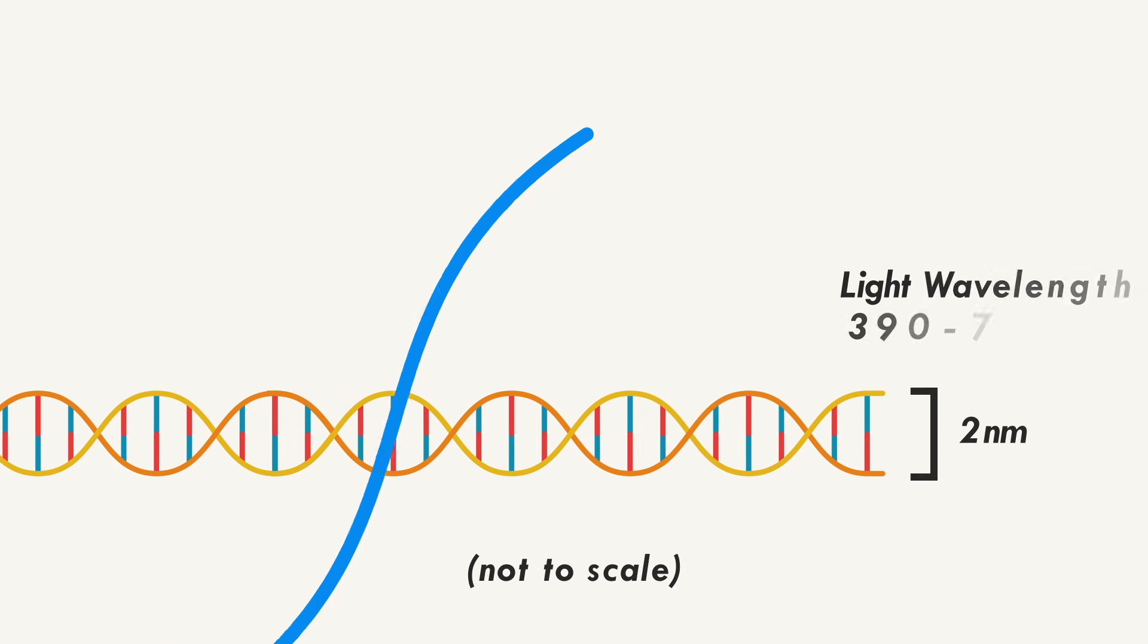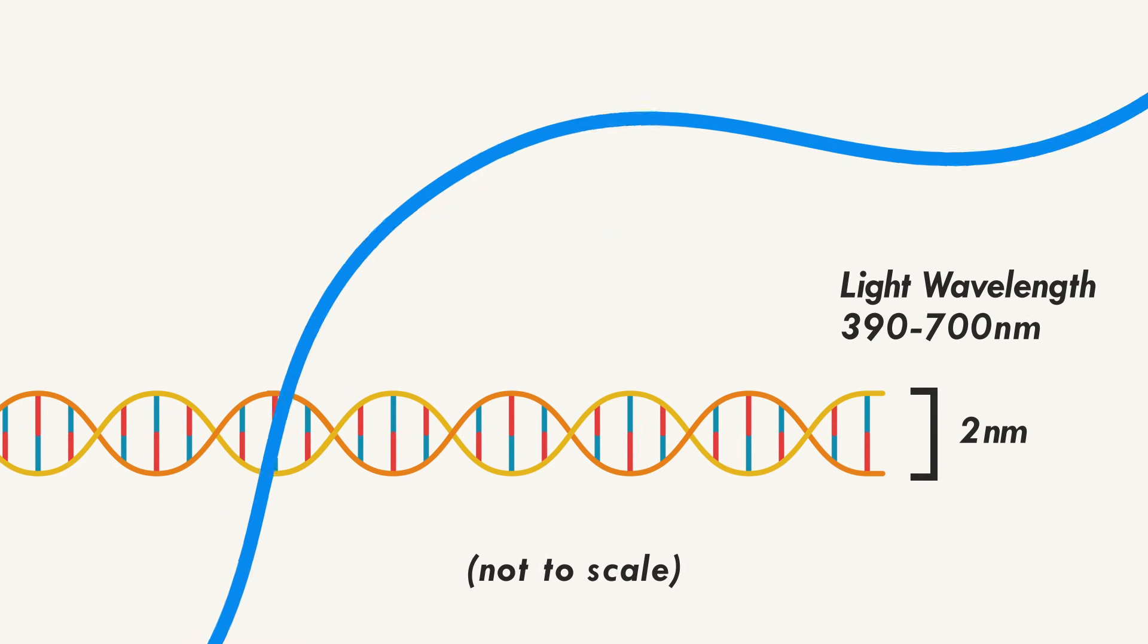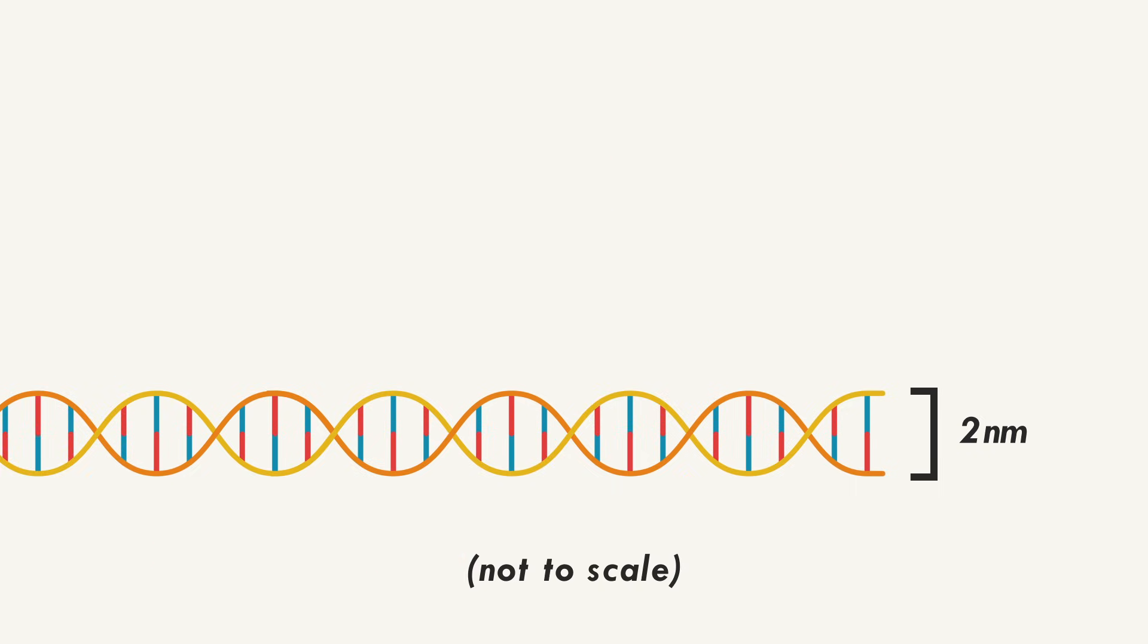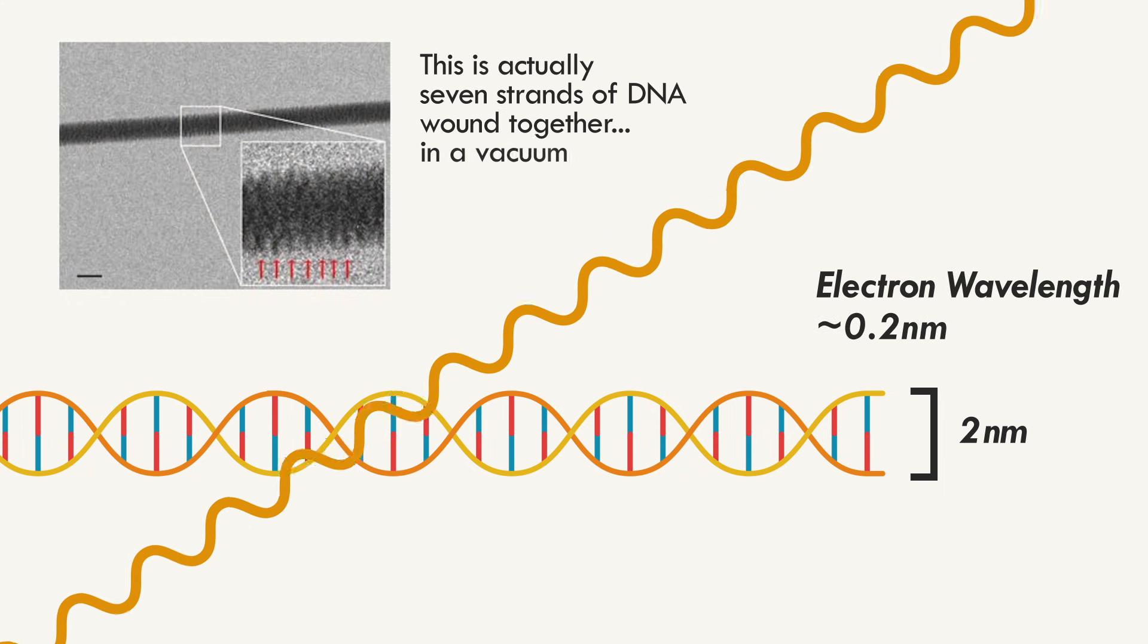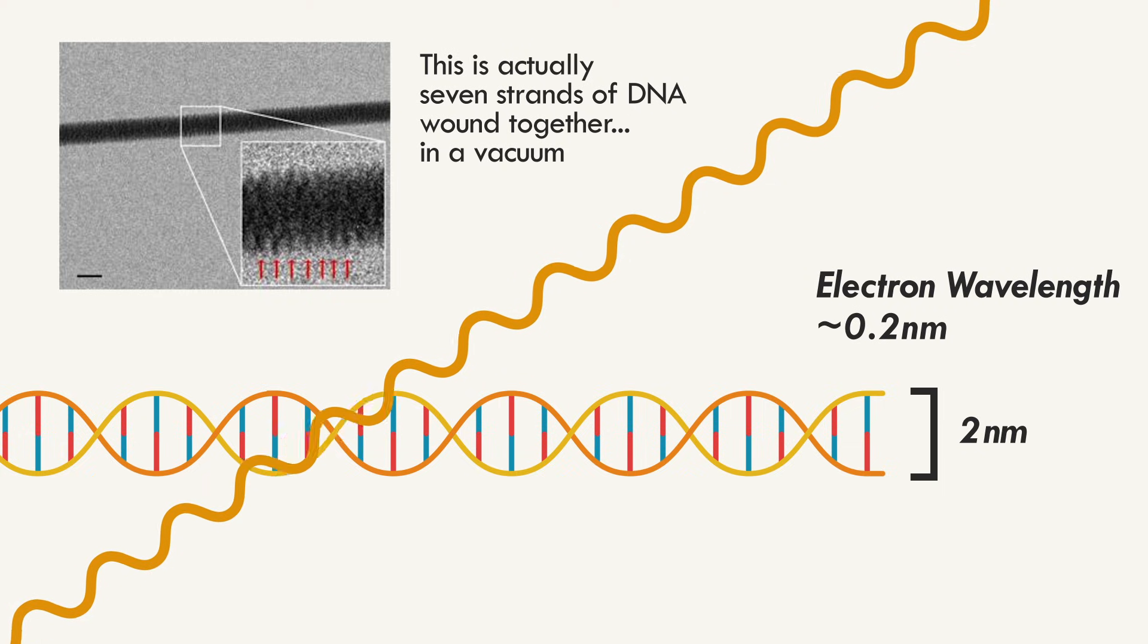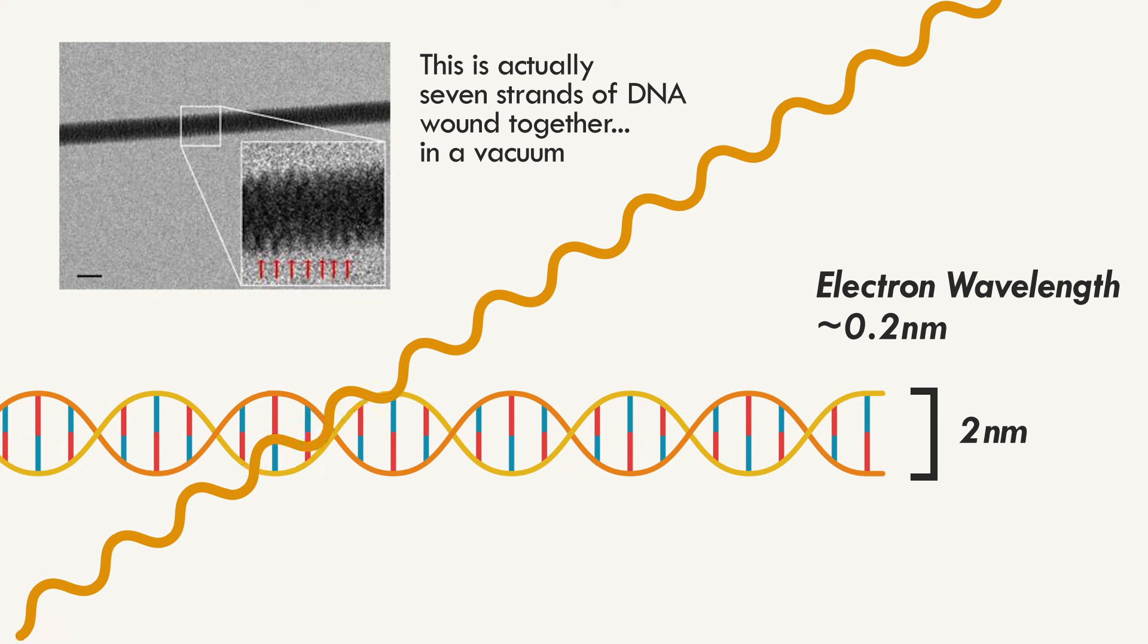Even the best light microscopes can't see anything much smaller than about 200 nm, because light can't really interact with something smaller than its wavelength. This is why scientists look at super small things with electron microscopes, because the wavelength of an electron can be a lot smaller than visible light. But even that doesn't give us a very good picture of something as small as DNA.